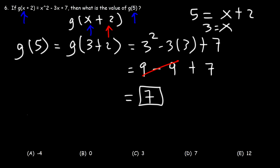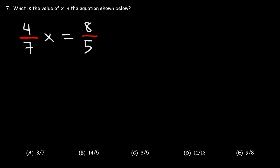Once you have the x value, plug it into the function. So it's 3 squared minus 3 times 3 plus 7. 3 squared is 9, and 3 times 3 is also 9, so these cancel. Thus g of 5 is equal to 7, and answer choice D is the right answer.